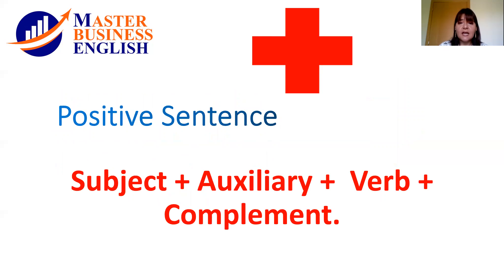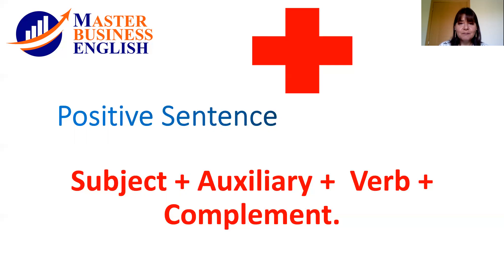In a positive sentence, there is a structure we must apply. We cannot omit any part of this structure and cannot exchange the position of any element. The structure is: subject, auxiliary, verb, and complement. That is a structure you should follow — not only in present simple but in all tenses. Don't forget to start with your subject, and remember not to exchange the positions or omit one of them.